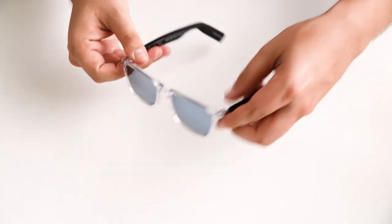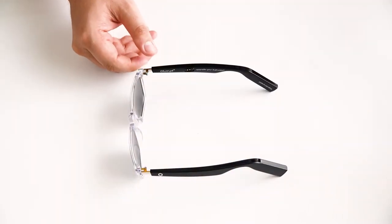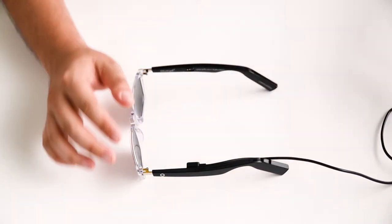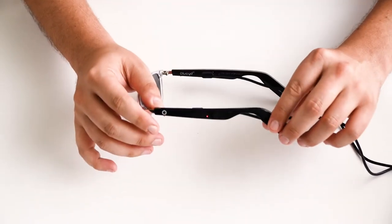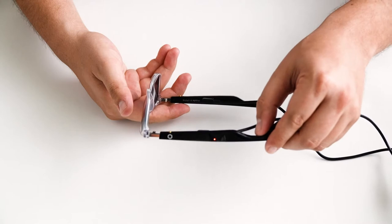First, to charge the glasses, you'll connect the included cable to each arm. They'll clip on just like so. It doesn't matter which end of the cable you connect to which arm. You'll see a red light come on each arm—that means the glasses are charging.